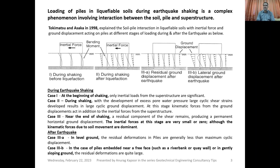Case 2 (Figure 2): during shaking with the development of excess pore water pressure, large cyclic shear resistance develops, resulting in large cyclic ground displacement, with increasing bending moment as shown in the figure. At this stage, dynamic forces from the ground displacement act in addition to the inertial forces from the superstructure. Case 3 — near the end of shaking: a residual component of shear remains, producing a permanent horizontal ground displacement, while inertial forces at this stage are minimal.